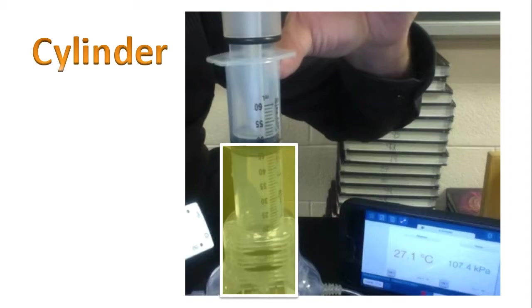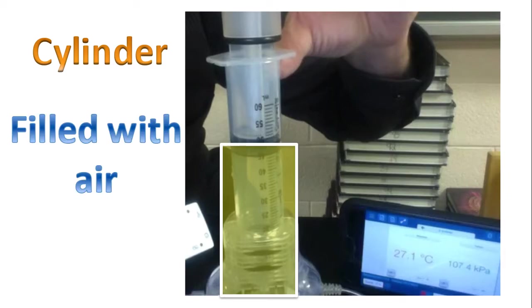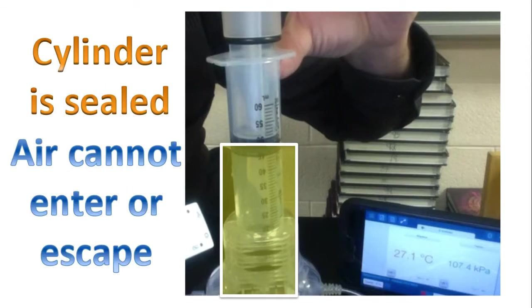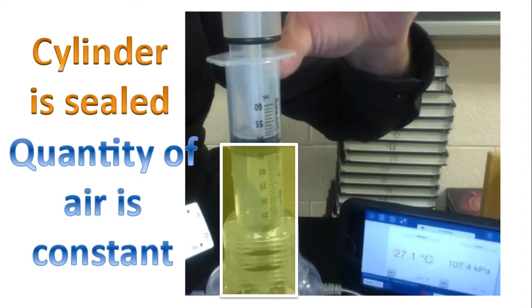So this is defined as our cylinder. The cylinder is filled with air. It's also sealed on both ends. This means that air cannot enter or escape the cylinder. This also means that the quantity of air will be constant throughout the experiment.